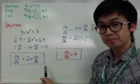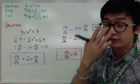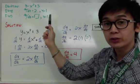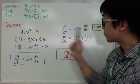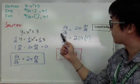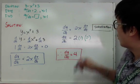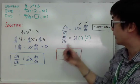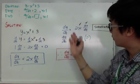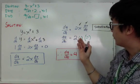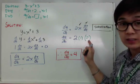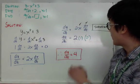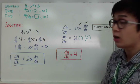I'm looking for a specific value of dy over dt. All I need to do is substitute the given rate and given numerical values. Since x equals one and dx over dt equals two, substituting gives dy over dt equals 2 times 1 times 2, so dy over dt equals 4. That's how we solve a related rates problem.